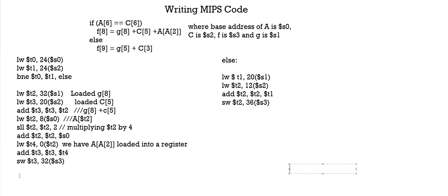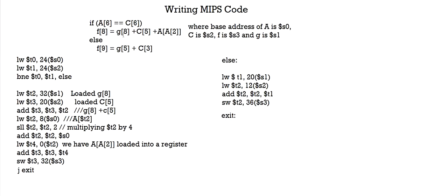One thing we missed: after checking if A[6] equals C[6] and executing the if-body, we need to put a jump to exit statement. Without it, after finishing the if-body, the code would fall through into the else statement. So we place our jump-to-exit there. And that was the entire MIPS code for this question.